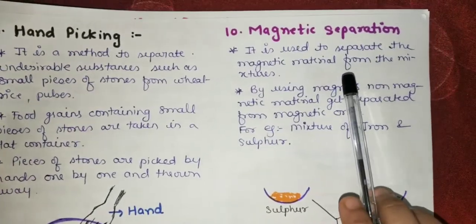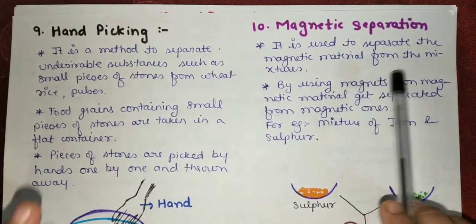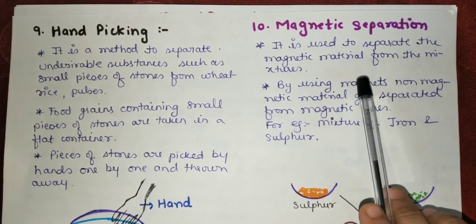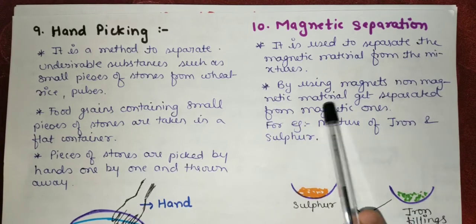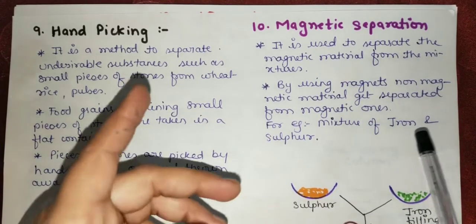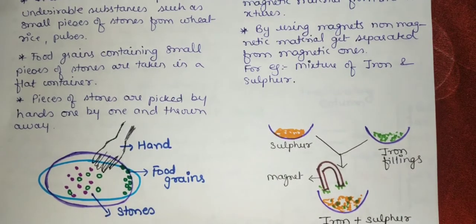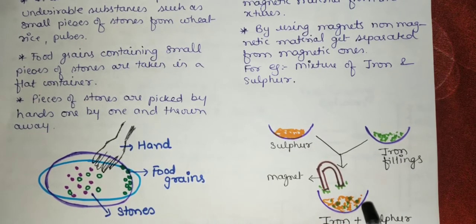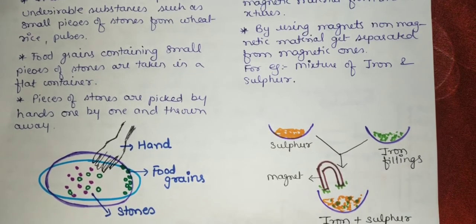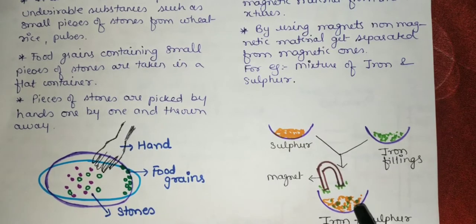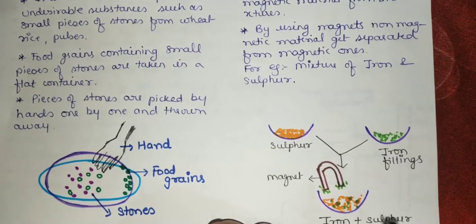Next is magnetic separation. This technique is used to separate magnetic material from a mixture using magnets. For example, if we take a mixture of iron and sulfur in a container and bring a magnet near it, the iron is attracted to the magnet while the sulfur particles are left behind. In this way, magnetic materials are separated from non-magnetic materials.